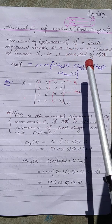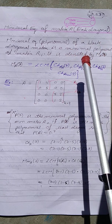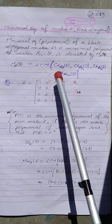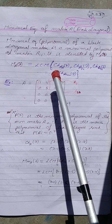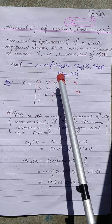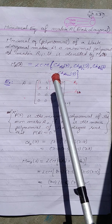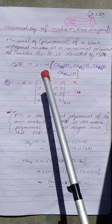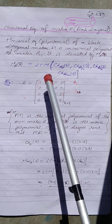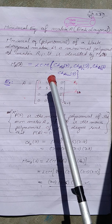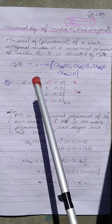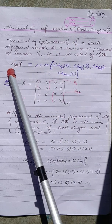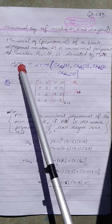We know about the block diagonal matrix from our previous lecture. In a block diagonal matrix, we have more than one matrix in the diagonal blocks of a square matrix. Such a matrix is known as a block diagonal matrix, and its minimal polynomial is represented by m(A, λ).